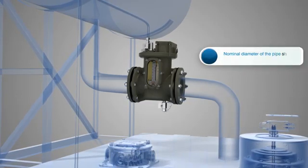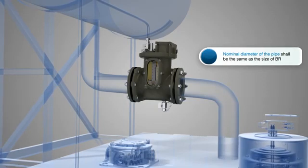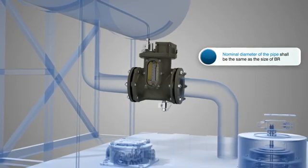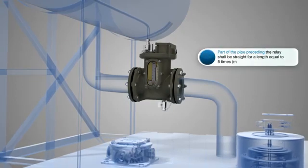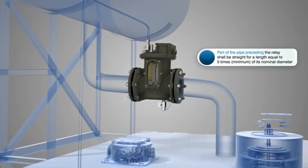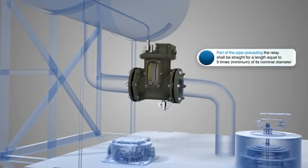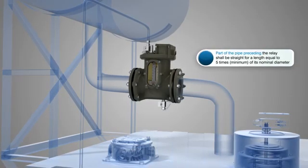The nominal diameter of the pipe shall be the same as the size of the Buchholz relay. The part of the pipe preceding the relay shall be straight for a length equal to 5 times minimum of its nominal diameter.